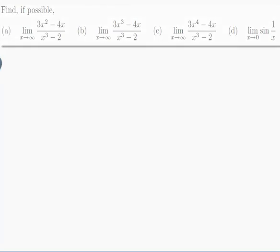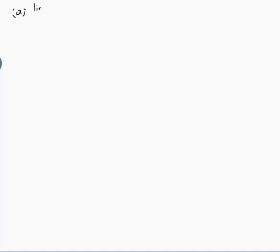Let's start with (a): the limit as x approaches infinity of (3x² - 4x) / (x³ - 2). That x approaches infinity means I'm looking at what happens as x gets larger and larger. I want to know if this formula approaches any particular number as x gets larger. If it just gets bigger and bigger, or wiggles back and forth between two numbers and never settles, then the limit doesn't exist.